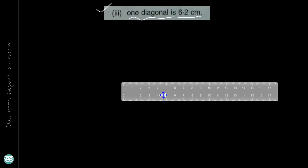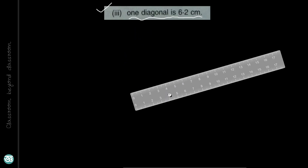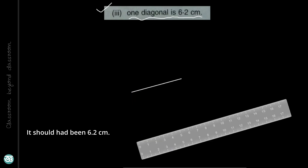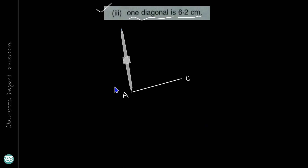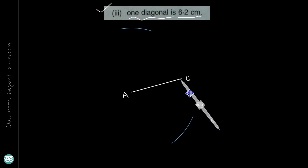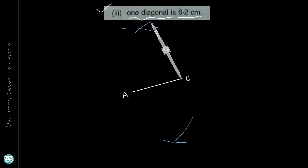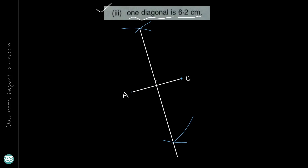Question number 3: one diagonal of a square is 6.2 cm. Construct the diagonal AC with length 6.2 cm. In a square, diagonals bisect each other at 90 degrees, so construct a perpendicular bisector of diagonal AC. Take A as center and draw arcs on both sides of line AC, then take C as center with the same radius to get two intersection points. Join these two points — this is the perpendicular bisector of AC at 90 degrees.